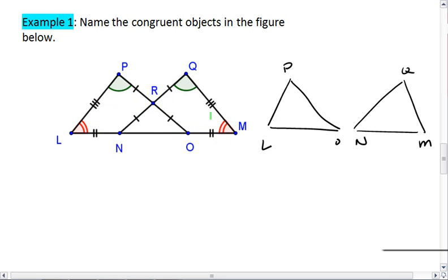We notice that triangle NPO angle L is congruent to angle M. We also see that angle P is congruent to angle Q. And by the third angles theorem, which we just learned, we now can conclude that angle LOP is congruent to angle MNQ.